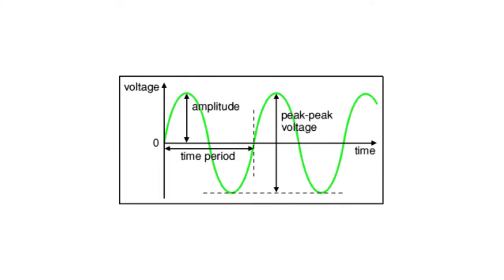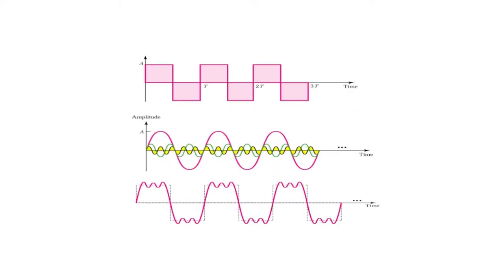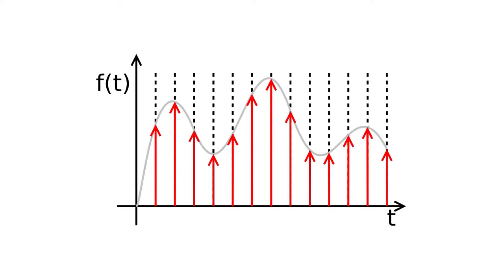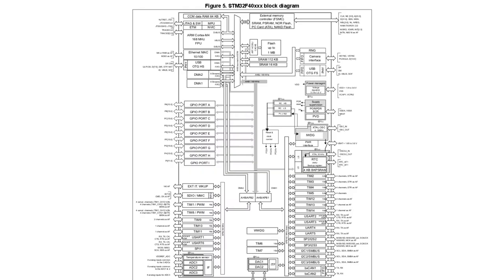There are quite a few signal parameters that one can analyze for a given signal, like signal peak-to-peak voltage, frequency, period, frequency spectrum, duty cycle, average and effective voltage, and much more. All of these parameters can be obtained with a microcontroller by using different peripherals in different ways.